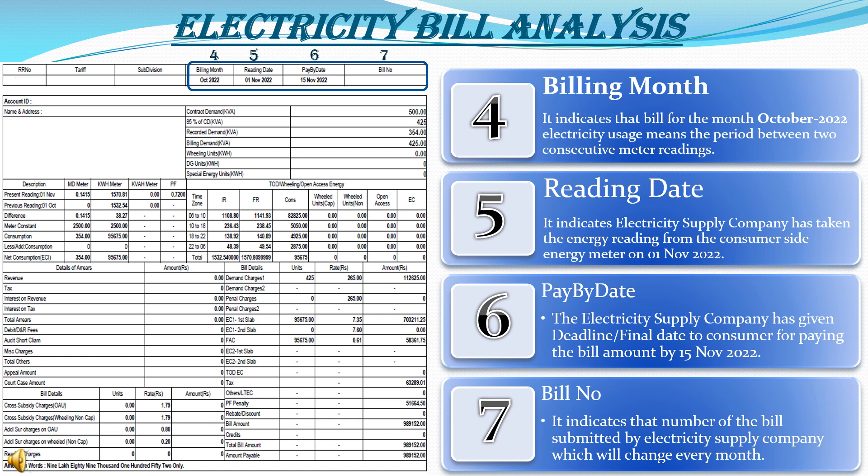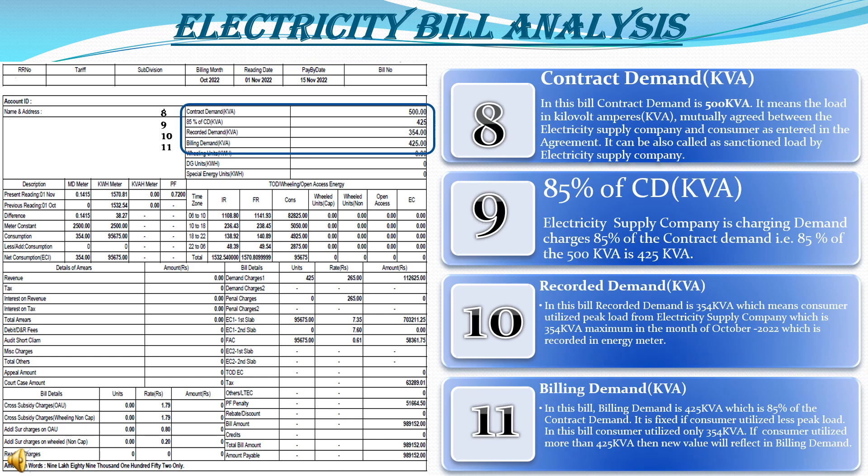The billing number indicates the number of the bill submitted by the electricity supply company, which changes every month — this is for the electricity supply company's reference. Contract demand is a very important term in the electricity bill. In this billing, the contract demand is mentioned as 500 KVA — the load in KVA mutually agreed between the electricity supply company and the consumer as entered in the agreement. It can also be called the sanctioned load by the electricity supply company.